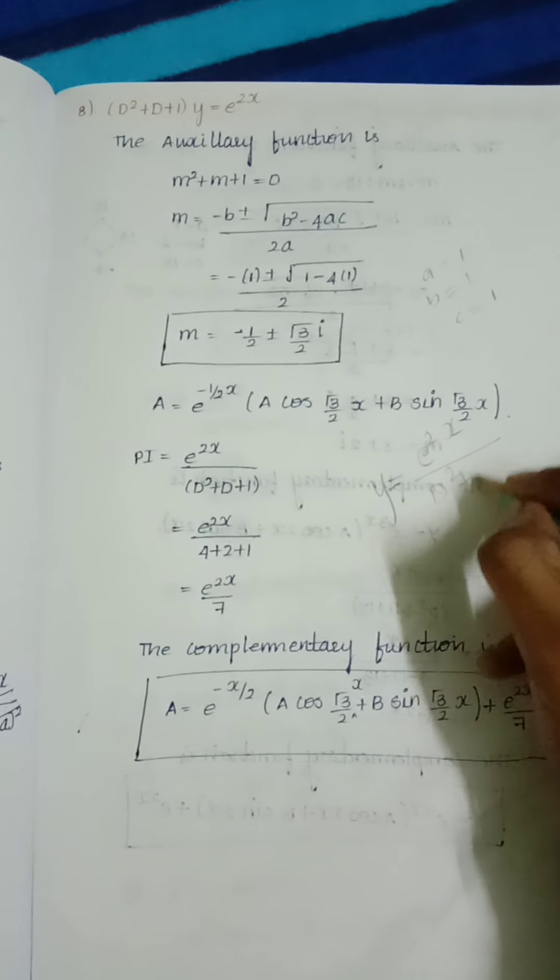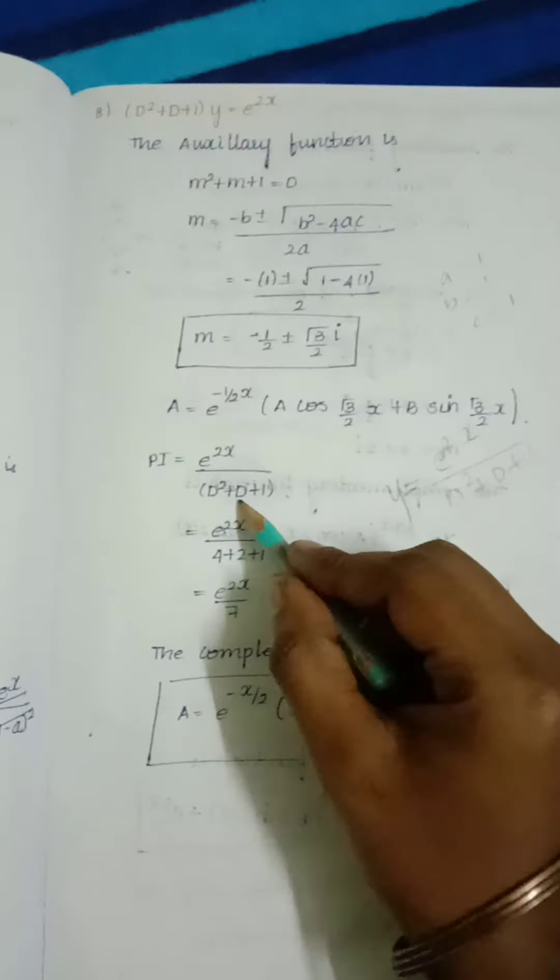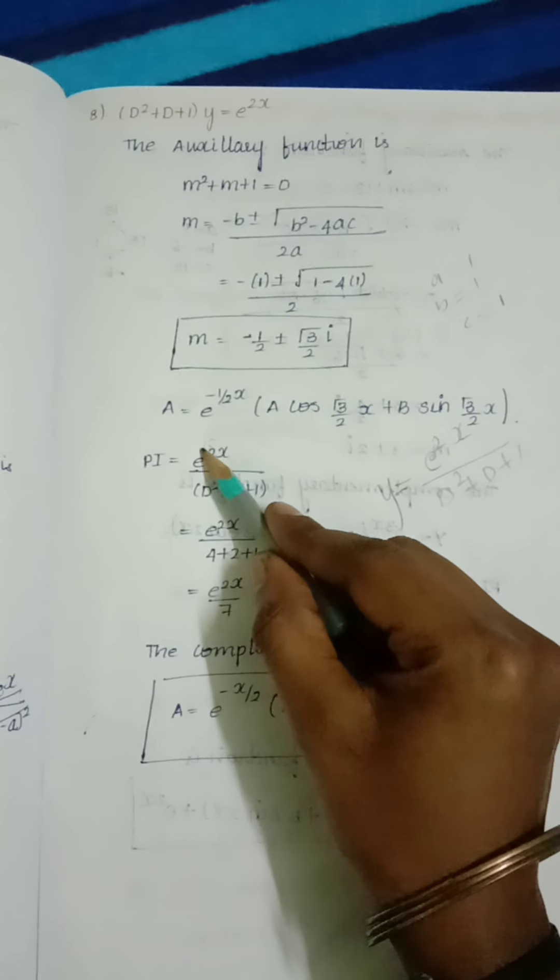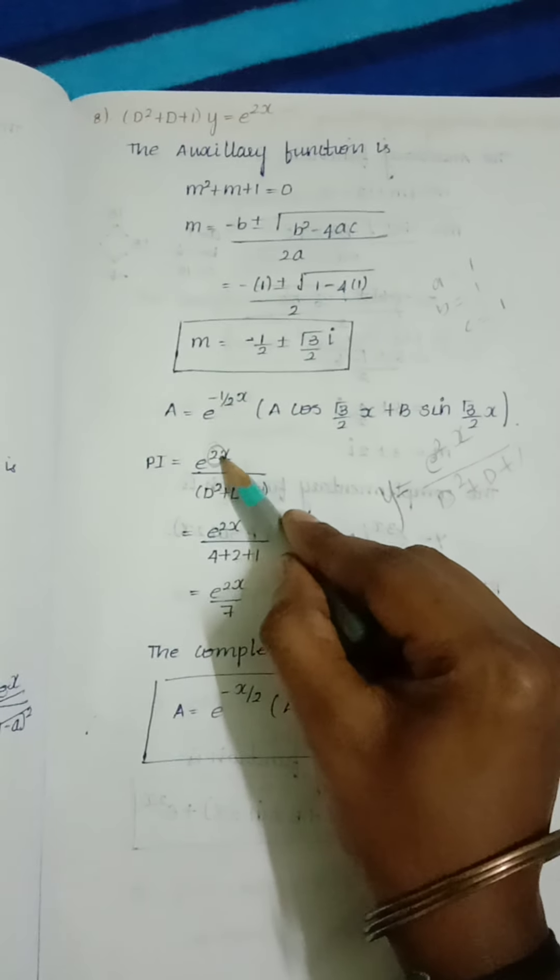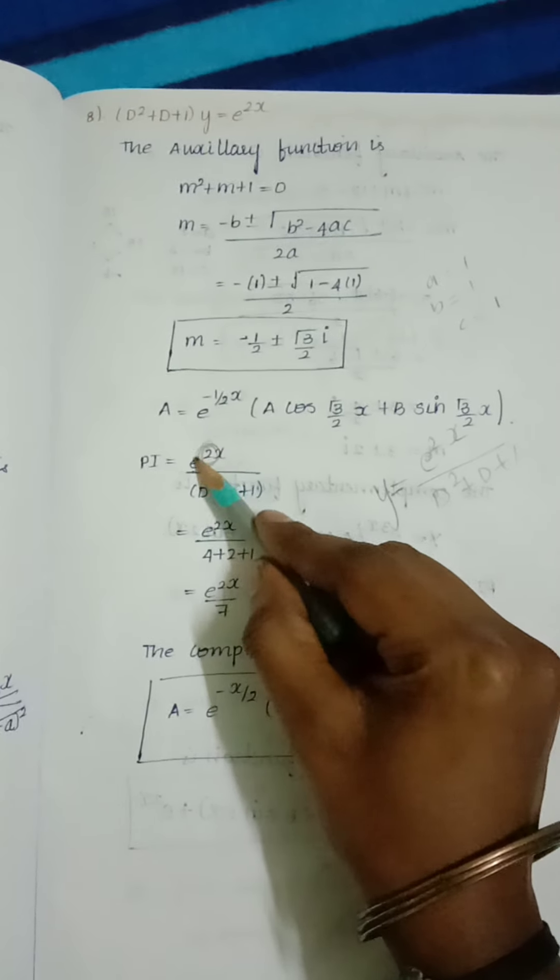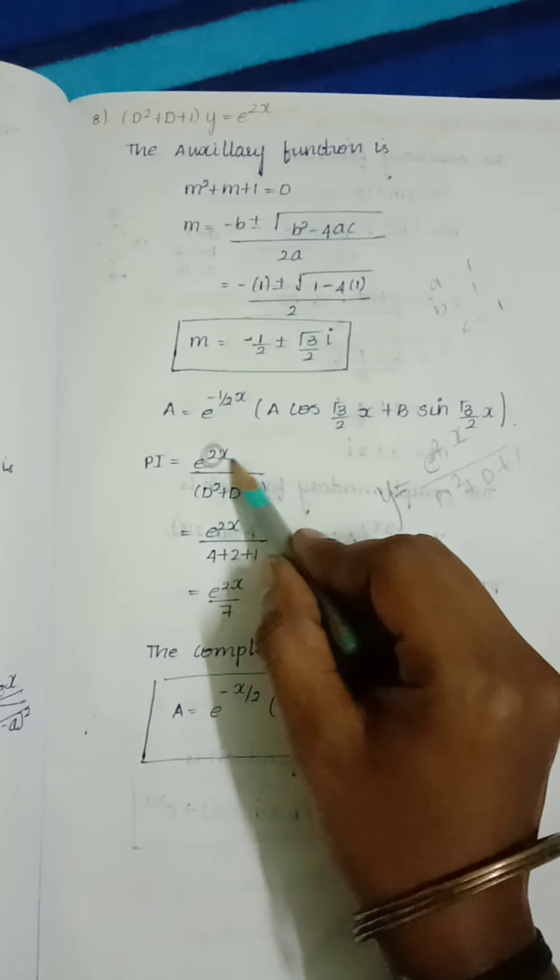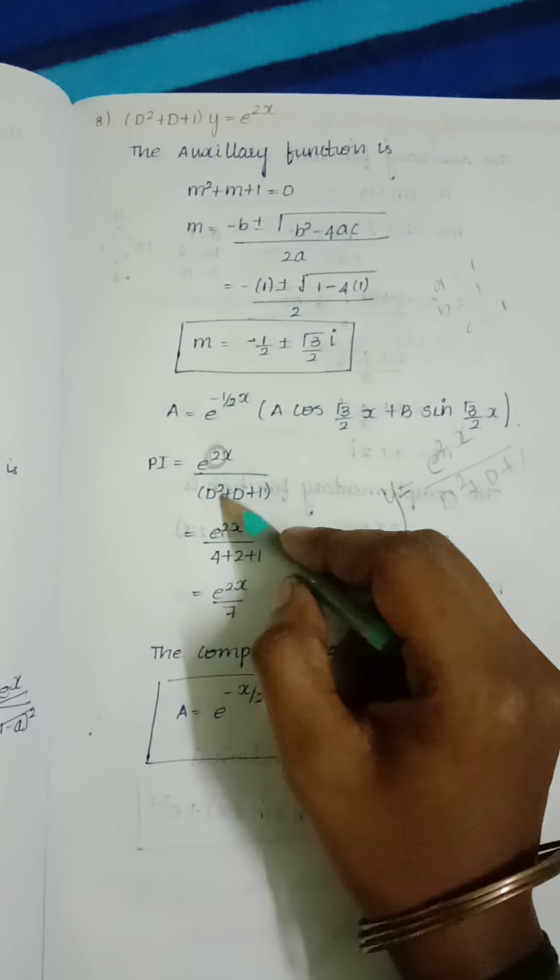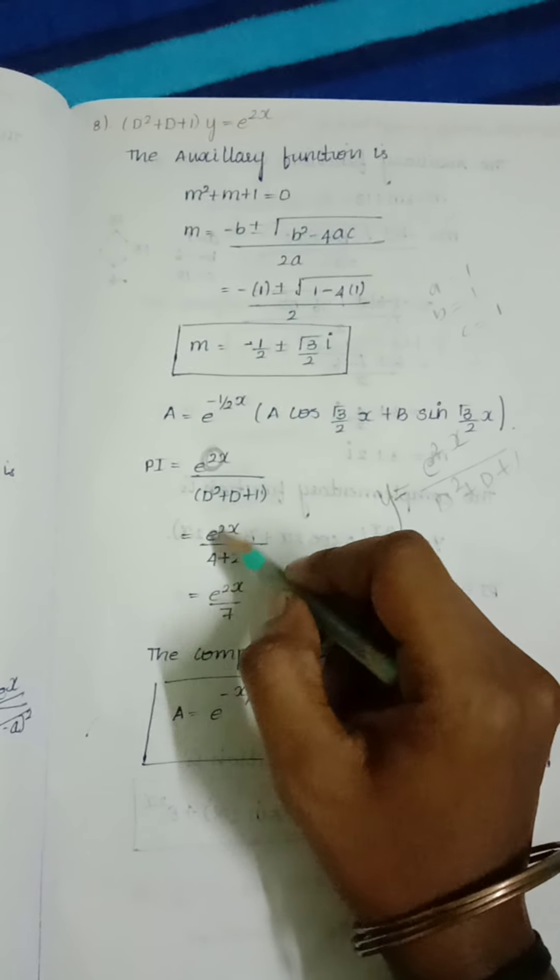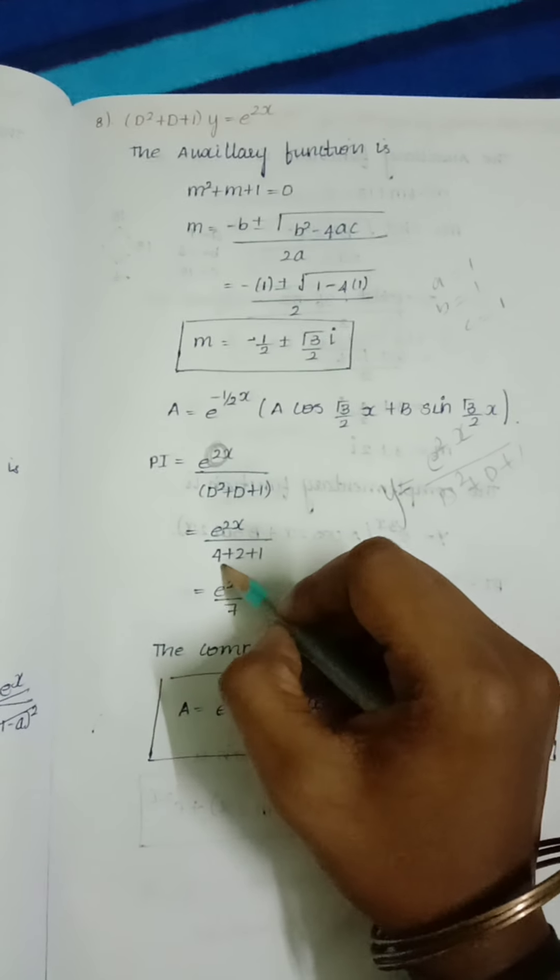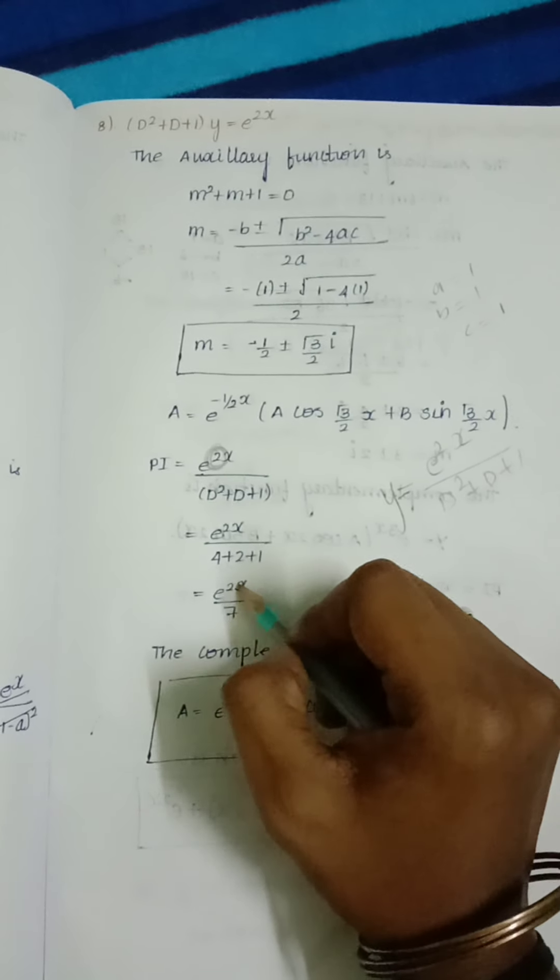Instead of whatever power e has, we substitute that for D. Since e^(2x) has 2, we substitute 2 for D, getting 4 + 2 + 1. So e^(2x) divided by 4 + 2 is 6, plus 1 is 7.